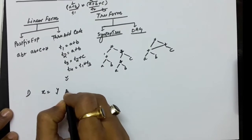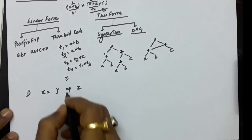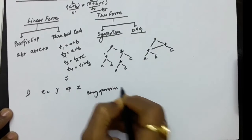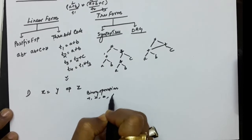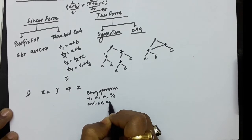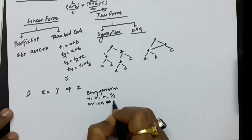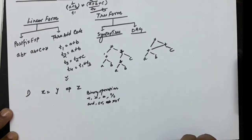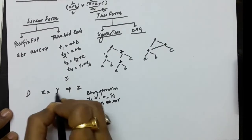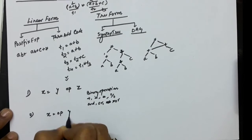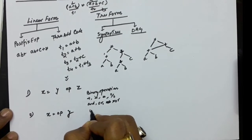The first three-address code form is: x = y op z, where op represents any binary operation — this includes arithmetic operations like addition, subtraction, multiplication, and modulus, as well as logical operations like AND, OR, and bitwise operations.